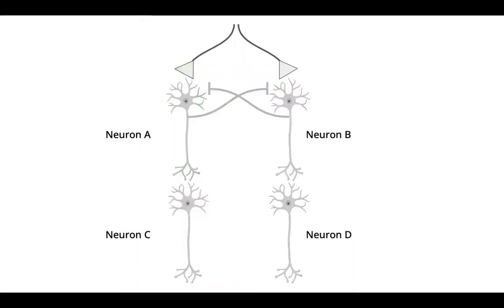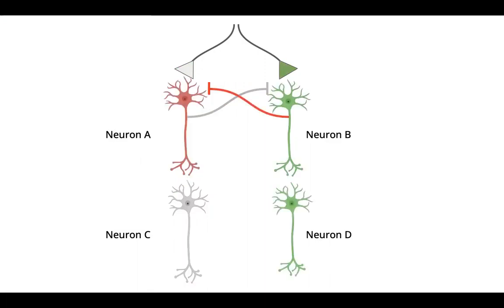Eventually, A gets fatigued. At this point, this switches the activation and neuron B starts, leading to A being inhibited and motor neuron D being excited. After a while, B gets fatigued and the cycle repeats.